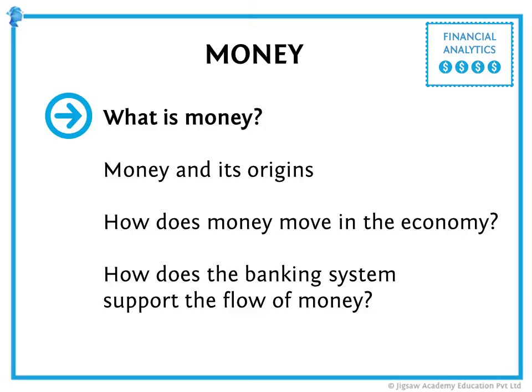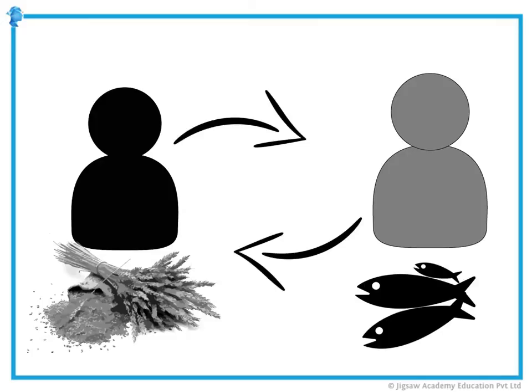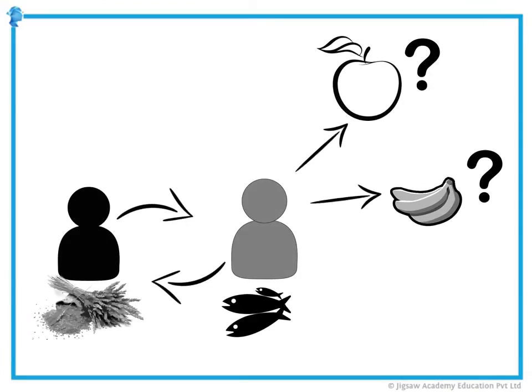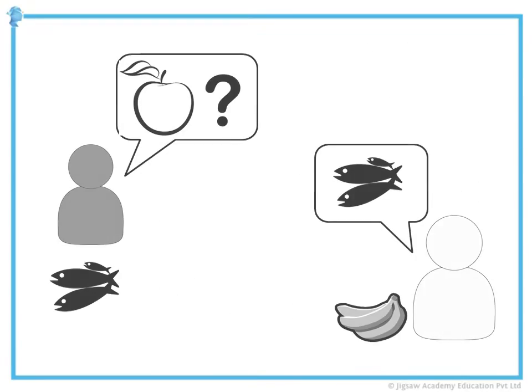Let's look at what is money. It all started with the barter system. You had something I wanted, I had something you wanted, so we exchanged one for the other. So perhaps I exchanged grain for fish and you exchanged fish for grain. Both of us now have grain and fish, and maybe we are content. But in the long run this turns out to be too tedious. We also realize that it did not always allow us to meet all our needs. You might have something somebody wants, but you do not always want what that person has.